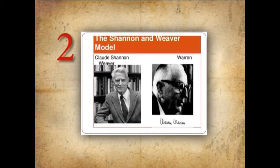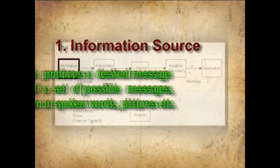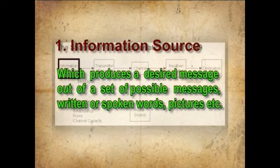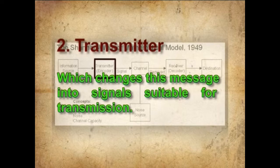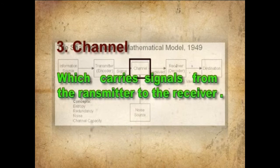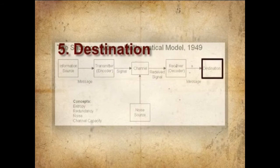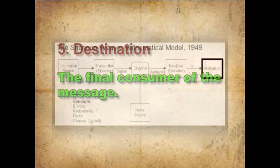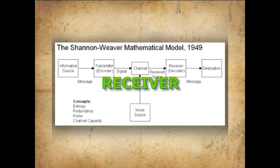Secondly, Shannon and Weaver, during 1949, proposed that their model of communication has five key components. Number one, an information source, which produces a desired message out of a set of possible messages — written or spoken words, pictures, etc. Number two, a transmitter, which changes this message into signals suitable for transmission. Number three, a channel, which carries signals from transmitter to the receiver. Number four, a receiver, a sort of inverse transmitter. Number five, a destination — the final consumer of the message. The graphical model shows: source → transmitter → signal → receiver → destination.